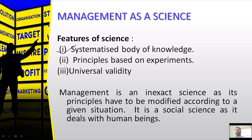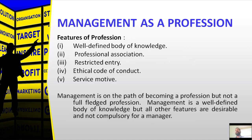Management is an inexact science as its principles have to be modified according to a given situation. It is a social science as it deals with human beings also — that means how work should be done by people so that they can be encouraged and work can be taken from them. So we can say that management works like science.